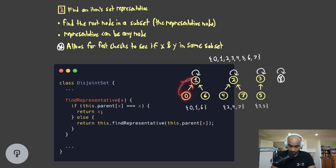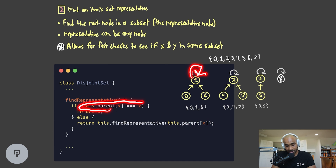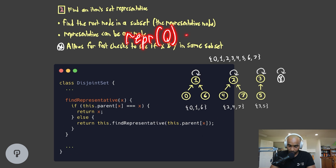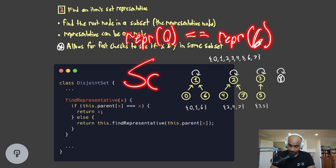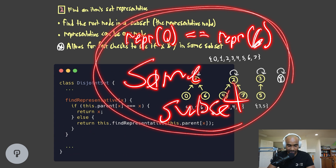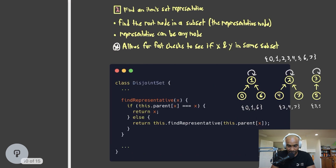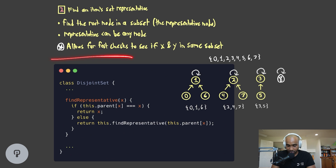So zero's parent is one — we find the representative of one, and one loops back to itself, so we return one. The representative of zero is one. If the representative is equivalent between two nodes, they're in the same subset — this is exactly what we're optimizing for: fast subset checks. This is why we have these tree structures: so we can find the representative node and check whether two items are in the same subset. The find operation simply climbs up the tree recursively or iteratively until it reaches the root.